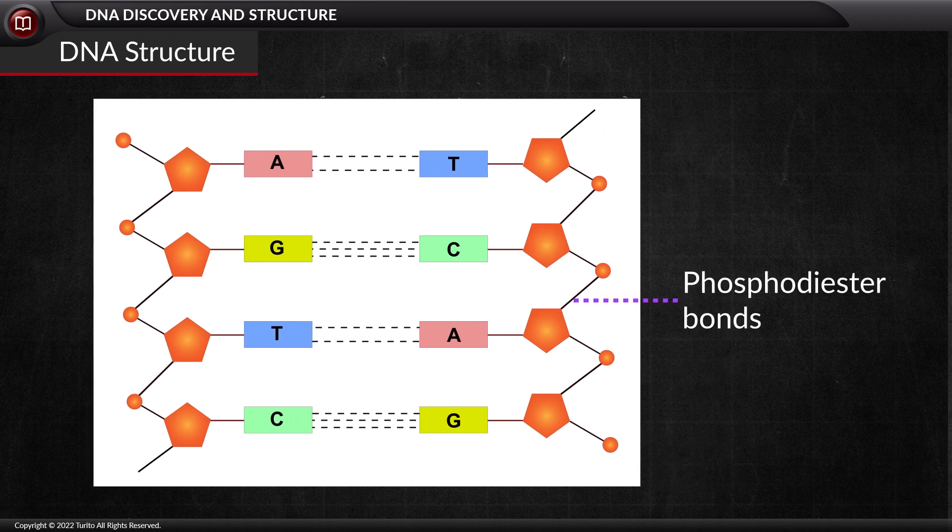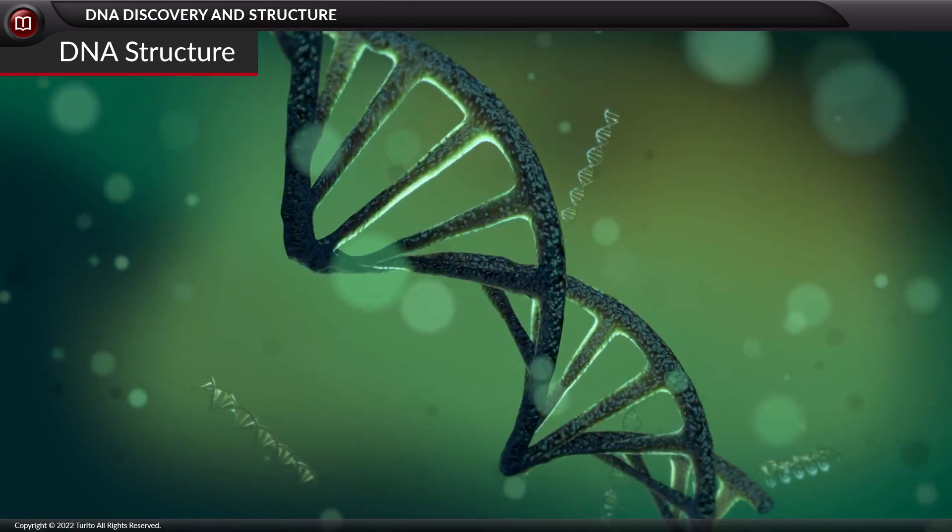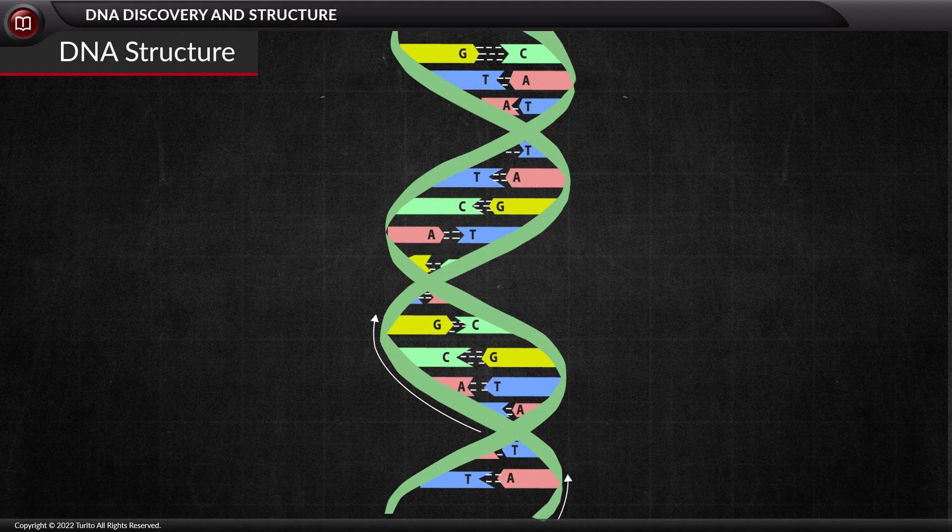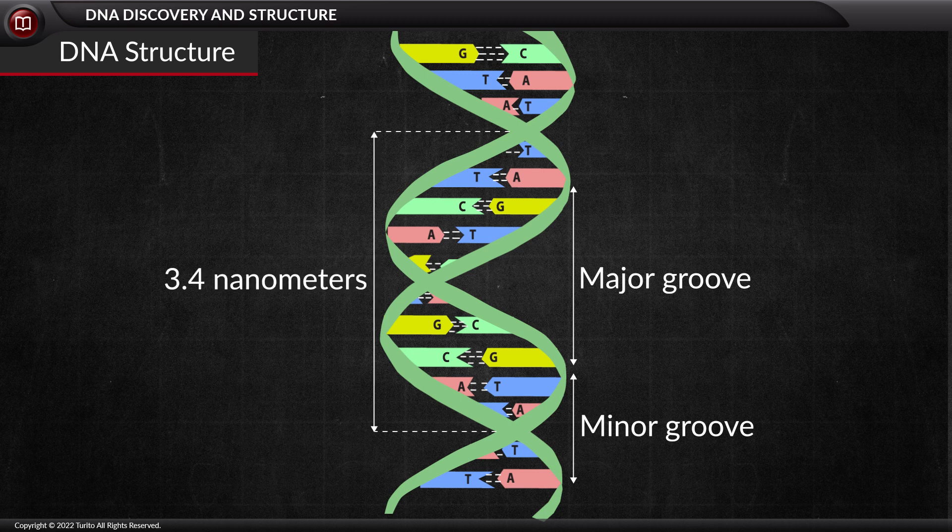Phosphodiester bonds, glycosidic bonds, and hydrogen bonds are the three types of bonds present in the DNA structure. As you travel around the DNA helix, the two strands are coiled in a right-handed fashion. The helix has two grooves: the major groove and the minor groove. Internally, there are 10 base pairs per turn of the helix, and each turn is a length of 3.4 nanometers.